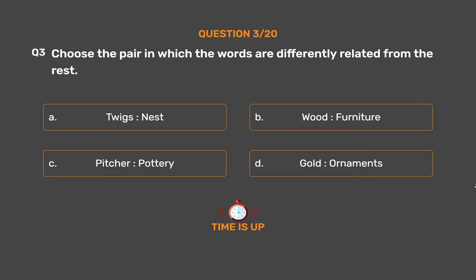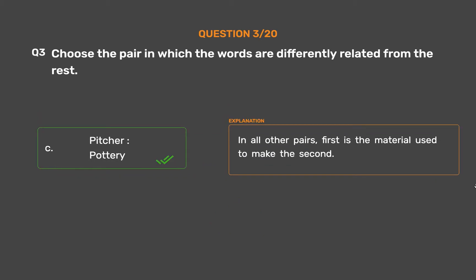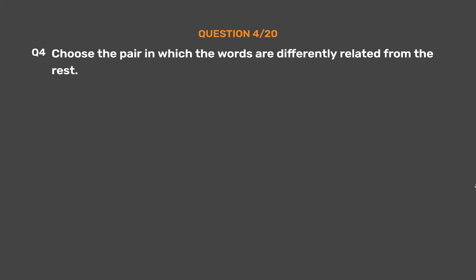The correct answer is Option C: Pitcher, Pottery. In all other pairs, the first is the material used to make the second.